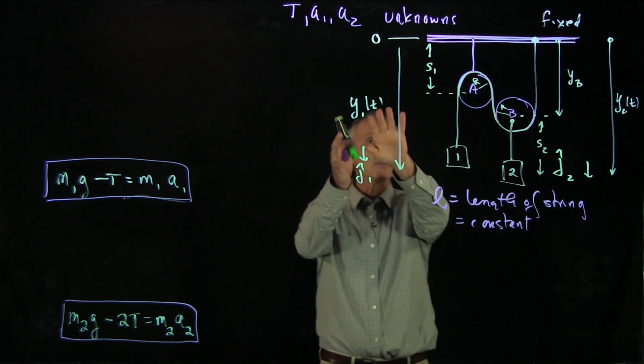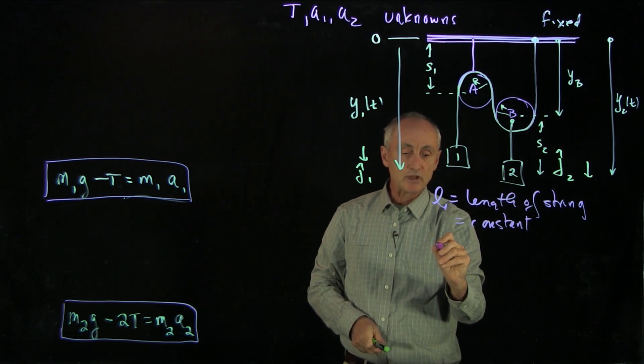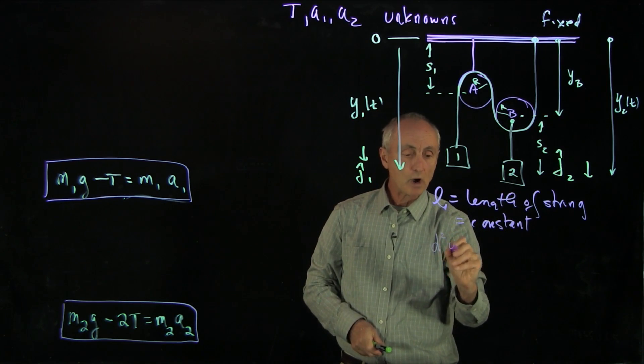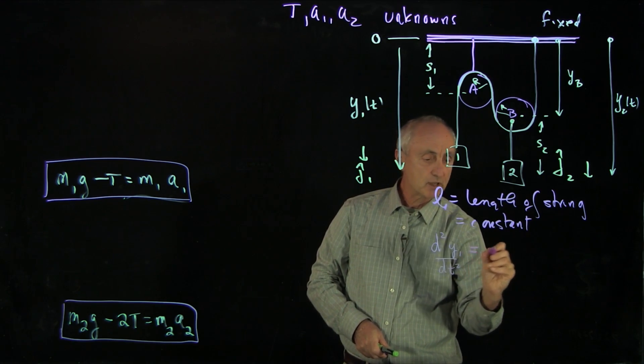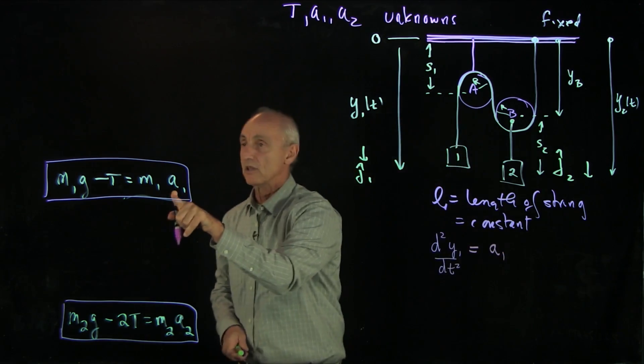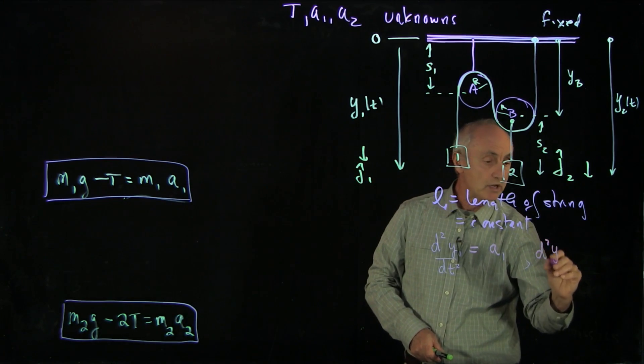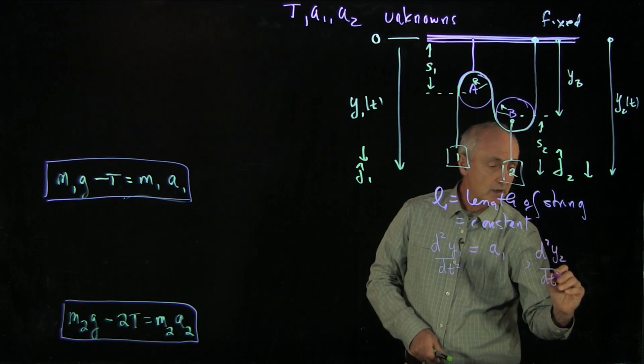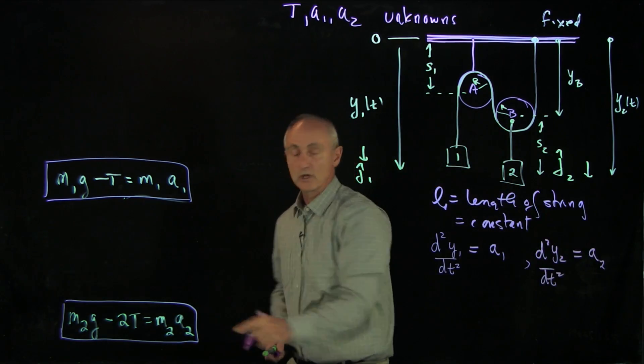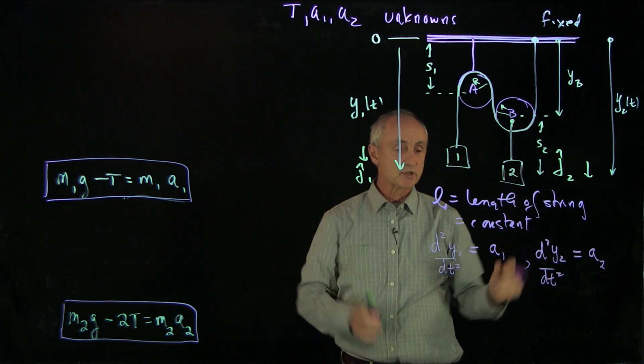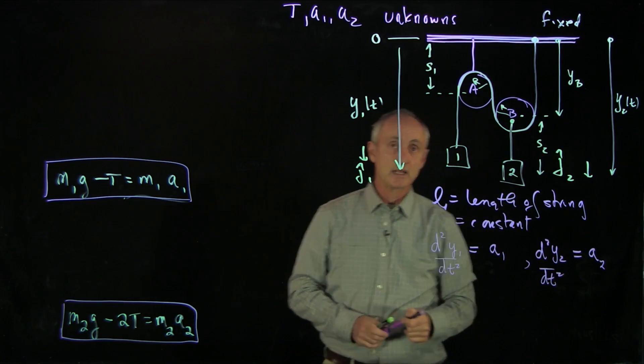When we define these coordinate functions in this fashion, we know that the second derivative, d²y1/dt², this is precisely what we mean by the acceleration of object 1. And in a similar fashion, d²y2/dt² is what we mean by the acceleration of object 2. So we've introduced a coordinate system and made it very clear what we mean by the accelerations a1 and a2.